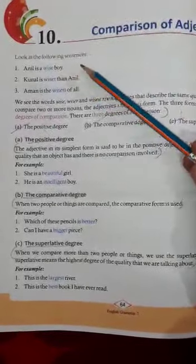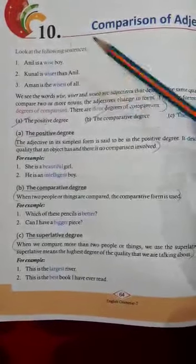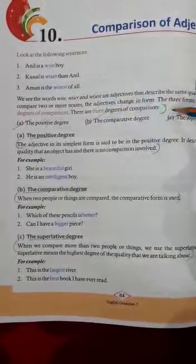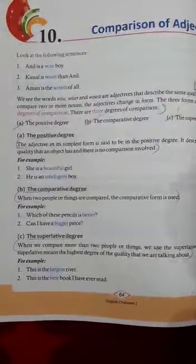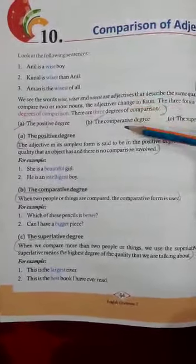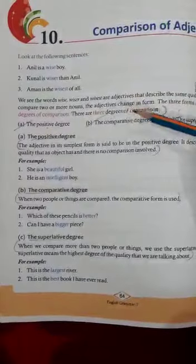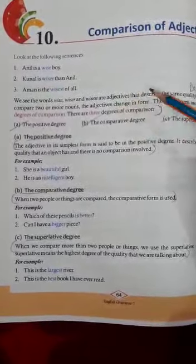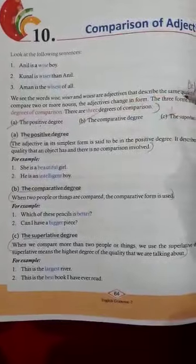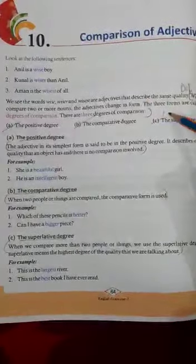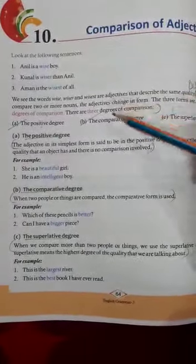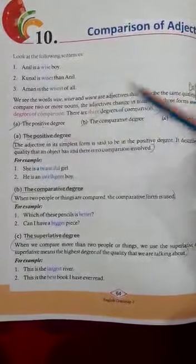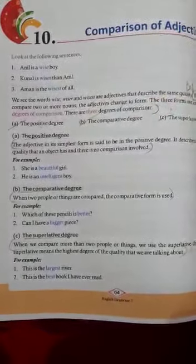In those sentences, three adjectives are used — wise, wiser, and wisest — which describe the same quality. When we compare two or more nouns, the adjective changes in form. There are three forms called degrees of comparison: positive degree, comparative degree, and superlative degree.